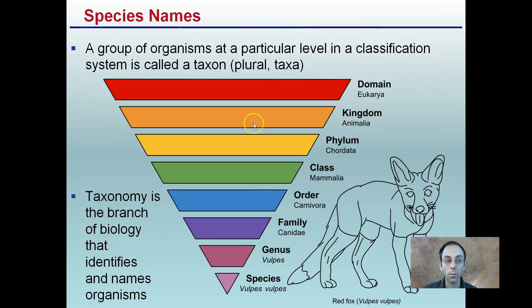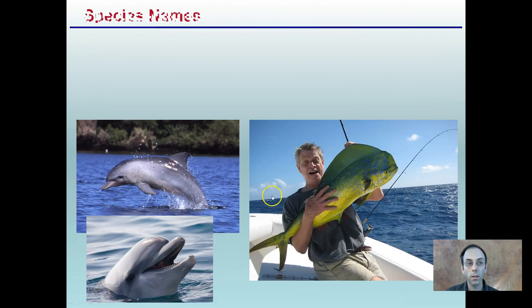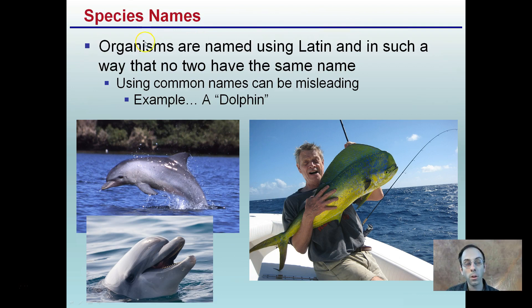You can think of it like a funnel. A group of organisms at a particular level in the classification system is called a taxon, and taxonomy is the branch of biology that identifies and names organisms, with species being the most specific level. As shown with our fox example, domain is the broadest category, working down through kingdom, phylum, class, order, family, and genus, all the way to species.